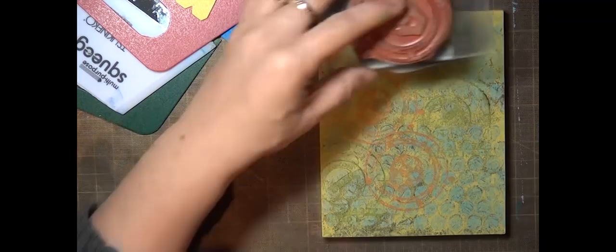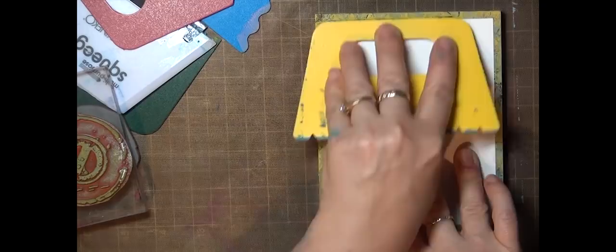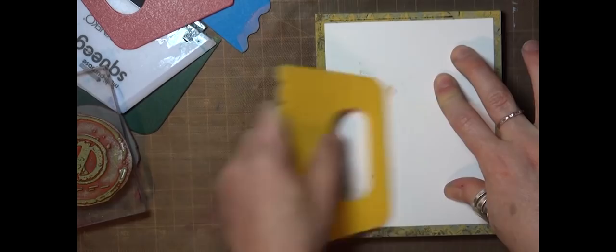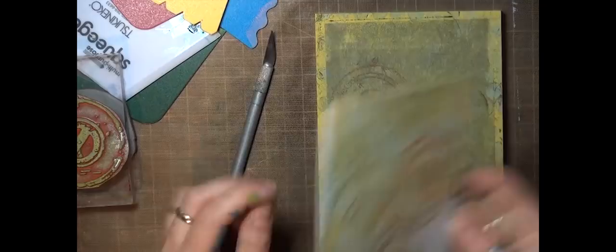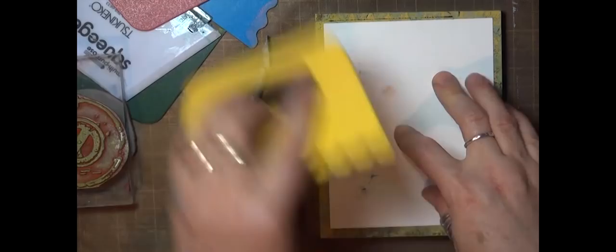This time I'm using the handle of one of my tools to make sure I lift up all the ink. You could use an old credit card as well, just anything that would help you get full coverage on your panel. Then I noticed that I missed a spot here, so I was able to line up my card again and pick up that area that didn't get inked.